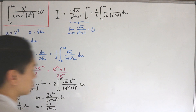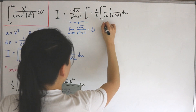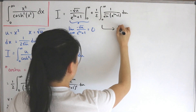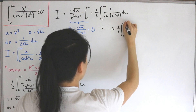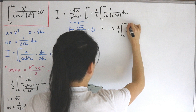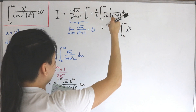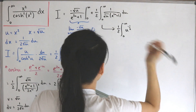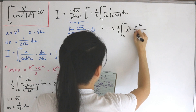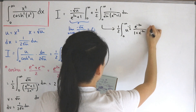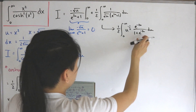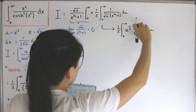Continuing forward, we rewrite the square root of u as u to the power negative one-half. For 1 divided by (e^(2u) + 1), we multiply e^(-2u) to both numerator and denominator, giving e^(-2u) divided by (1 + e^(-2u)). This form is now useful because it resembles a geometric series.